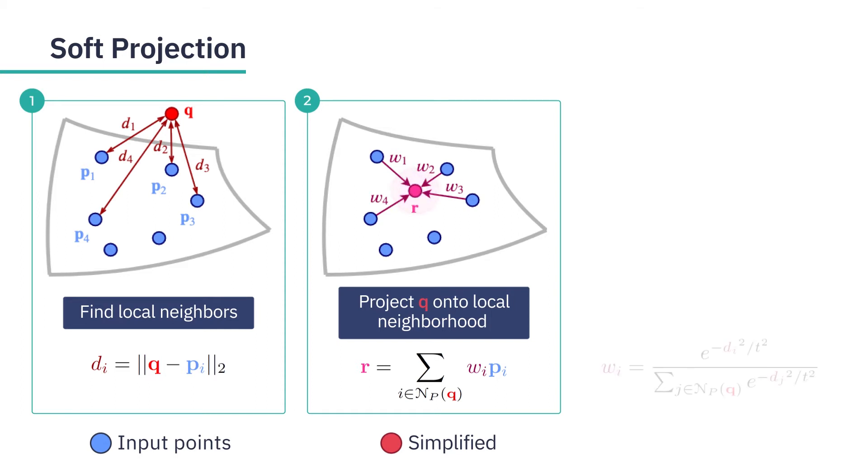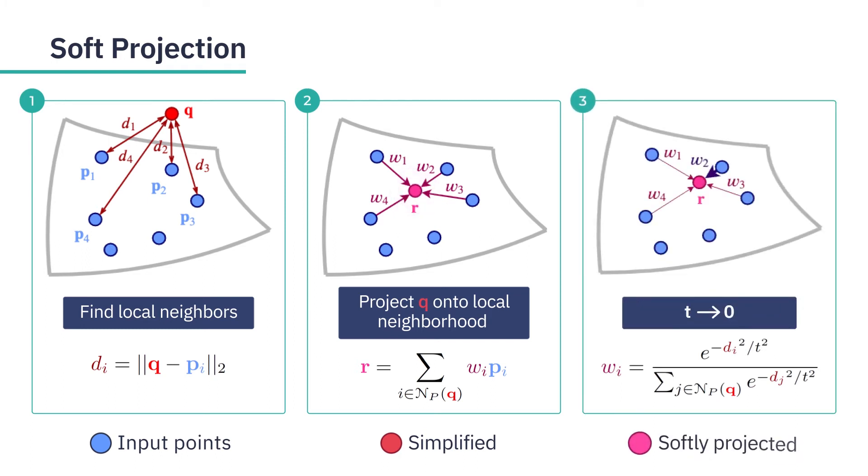The projection weights are determined by the distance to the neighbors and a temperature coefficient. As the temperature goes to zero, the weight distribution becomes closer to a delta function, which approximates the selection of a point from the input.